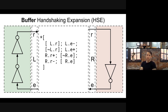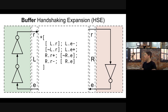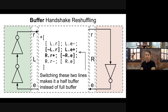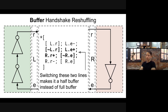The next step, now that we have handshaking expansions, is to optimize them to produce a circuit that is performant, energy-efficient, or area-efficient. The first thing we notice is two lines — the guard on L.r going low, followed by raising L.e, followed by raising R.r, then waiting for R.e to go low. If we switch those two lines, it turns the full buffer specification into a half buffer.